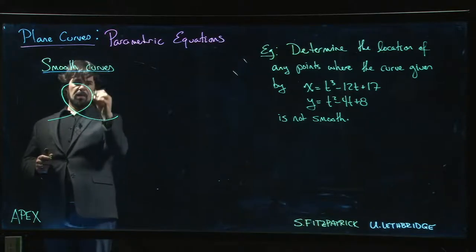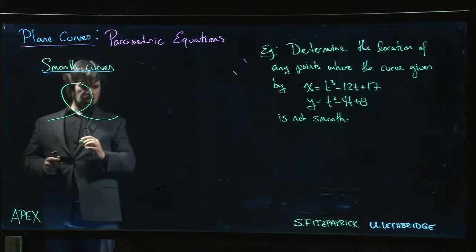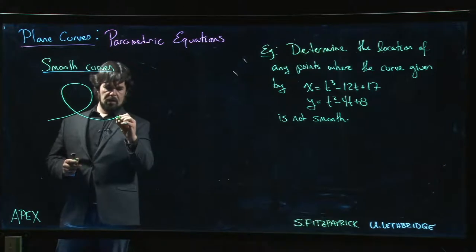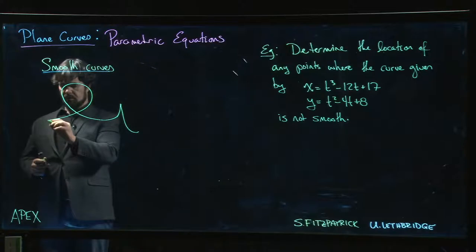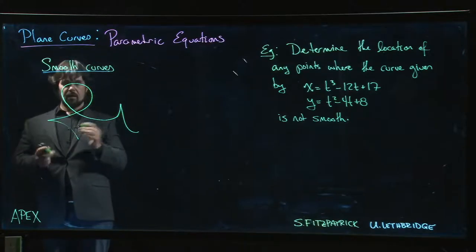That's still smooth as we pass through that vertical tangent, same as it is as we pass through a horizontal tangent. But we might want to avoid a curve that goes up and does something like that, or has a cusp and comes around. We want to avoid corners like that.